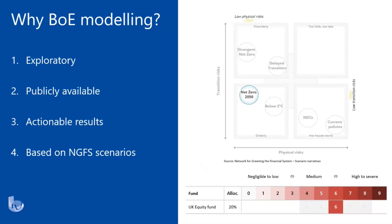The Bank of England modelling is also based on the NGFS scenarios — the Network for Greening the Financial System scenarios. Two of the key risks these scenarios look at are physical risk and transitional risk, and where the different scenarios fit in terms of higher and lower exposure to these risks. Ultimately, one of the primary reasons for using the Bank of England data is that we wanted to produce actionable results for trustees and pension schemes to use within their TCFD reporting.